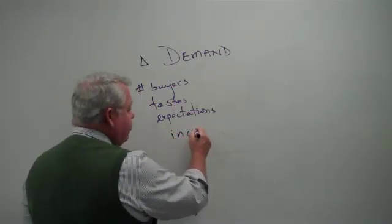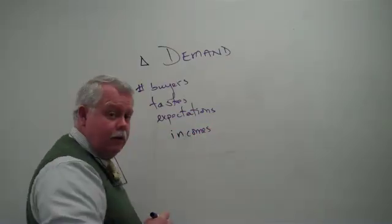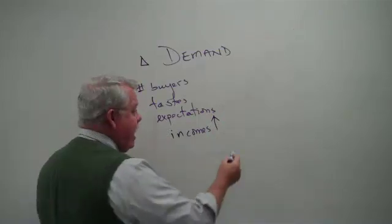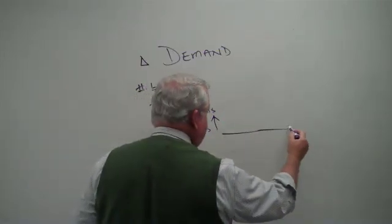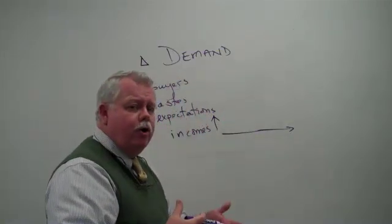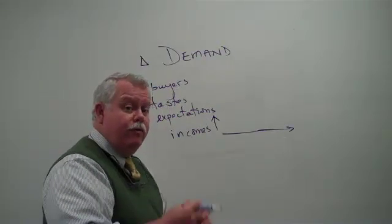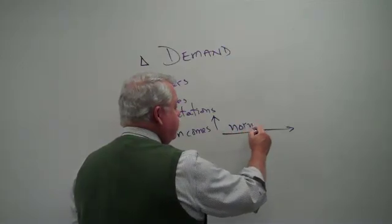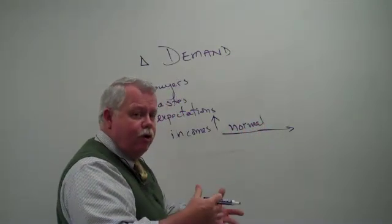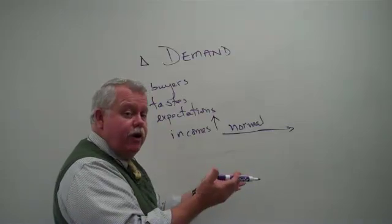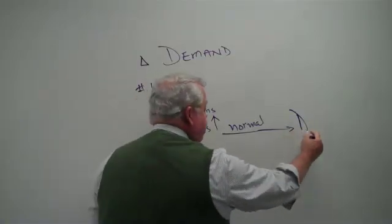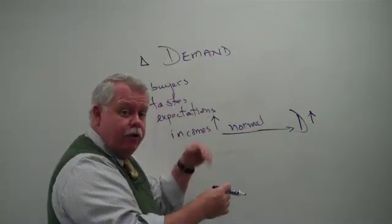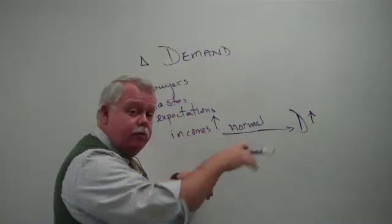The other two are here. When you have a change in incomes, when incomes rise, then we have to ask, is this a normal good or is this an inferior good? We've got to know that information. If it's a normal good, most goods are normal goods. As people's incomes increase, their demand for most products increases. And so the arrows move together. Decrease in incomes, decrease in demand.